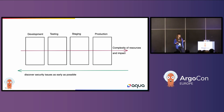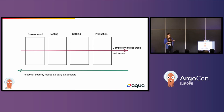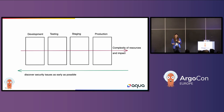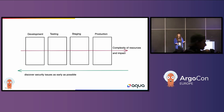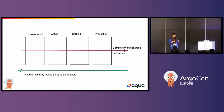Ideally, you want to identify security issues as early as possible when you get started configuring your different resources. For example, when you start containerizing your application, you want to already start scanning the container image, the base image you're using, as well as your Dockerfile for security issues. The earlier you catch security issues, the easier it is to fix them long term. If you only start scanning your resources when they're just about to go to production, it's much more difficult to identify and fix them.